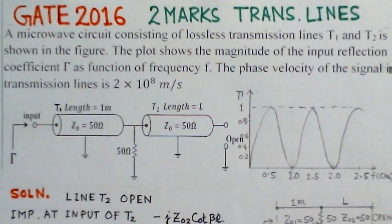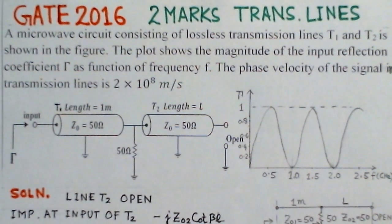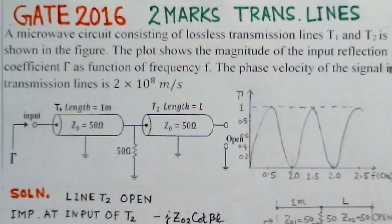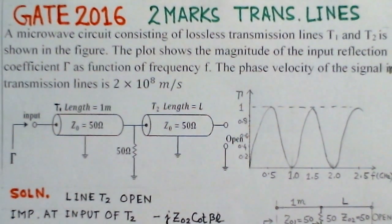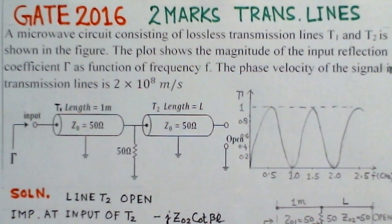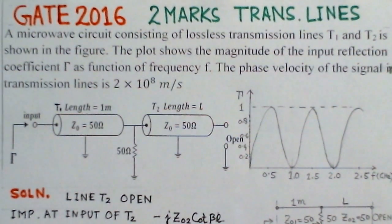The present problem is the third problem in the set of problems on transmission lines, and this problem is from the year 2016. Basically, this problem has two cascaded sections of line where the input reflection coefficient at the input is given, and one has to find the length of the unknown line section.